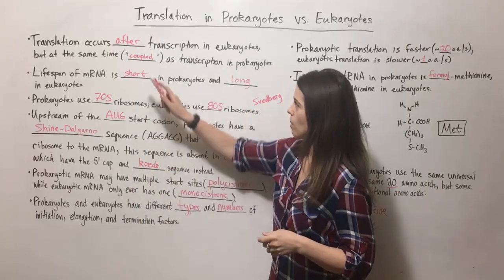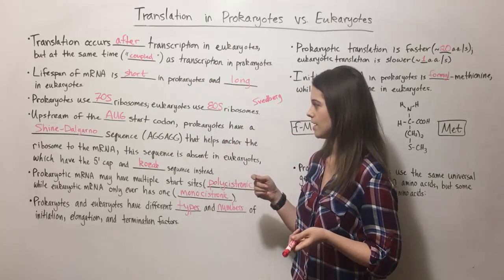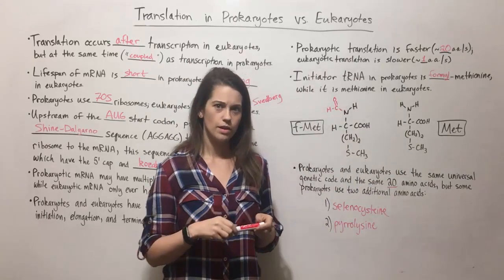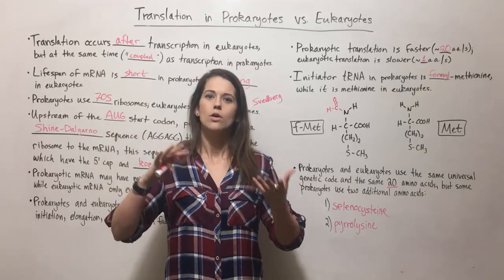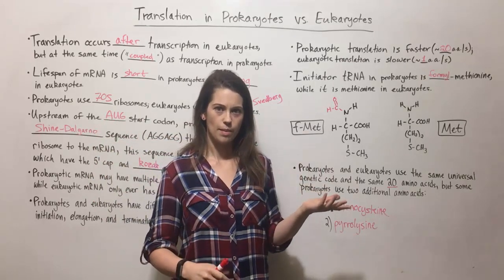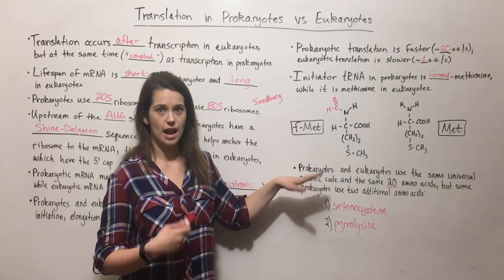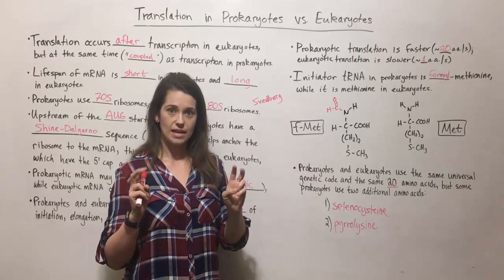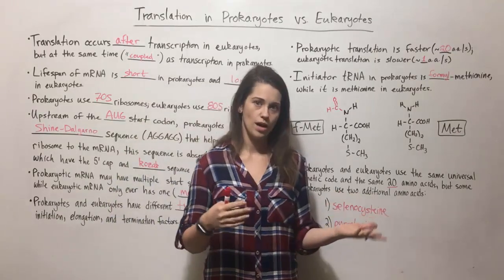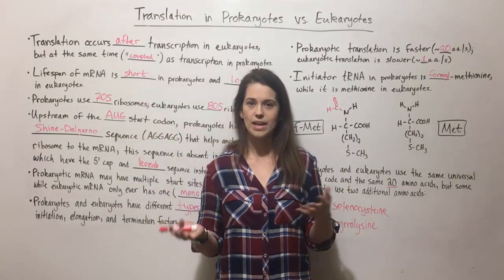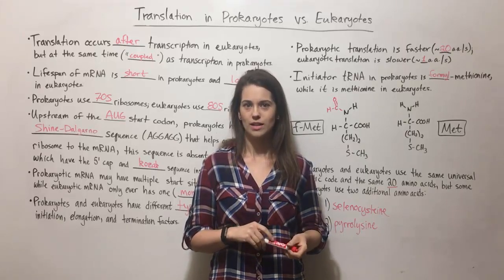If you're interested in learning more, you can see my video on coupled transcription and translation in prokaryotes. You can also see my video on the central dogma of molecular biology, which explains how information travels from DNA through that RNA intermediate into a polypeptide. I've also got a video on the universal genetic code and one on how transcription differs in prokaryotes and eukaryotes. Feel free to check out those videos — thanks for watching Biology Professor, I'll see you next time!